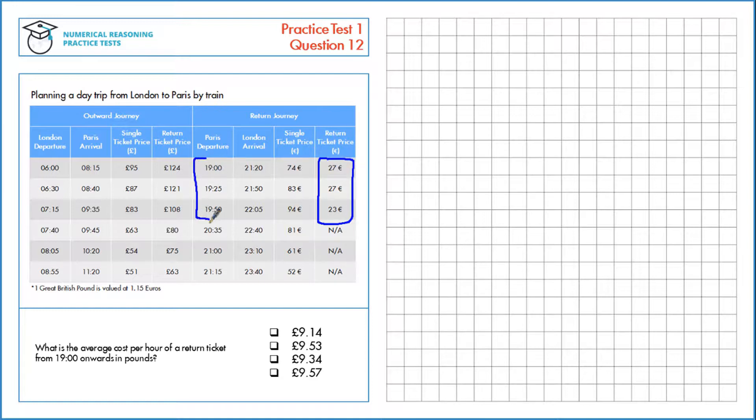And we need to look at the times that it takes as well, so the duration from here to here is two hours 20, and then the other two durations are two hours 25 plus two hours 15 minutes, which